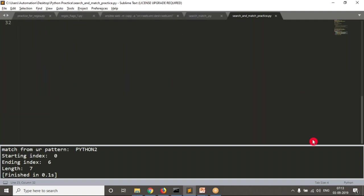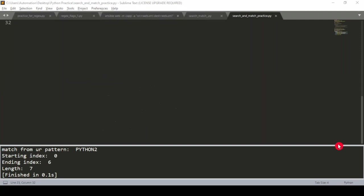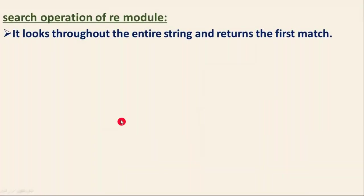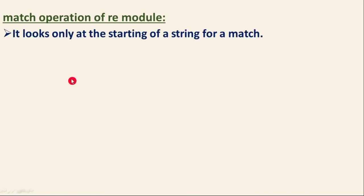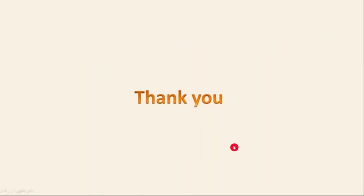Finally, if you have multi-line text, search will look anywhere in the string but return only the first match, whereas match will look only at the 0th index position — that's the simple difference. The syntax is: re.search(pattern, string, flags) and re.match(pattern, string, flags). You can include optional flags for both. Thank you for watching this video.